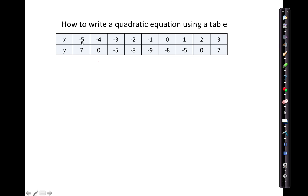When x equals negative 5, y equals 7. And over here, when x equals 3, y equals 7. When x equals negative 4, y equals 0. When x equals 2, y equals 0.